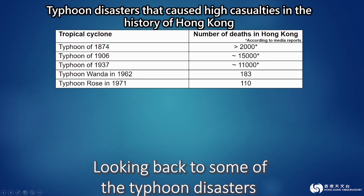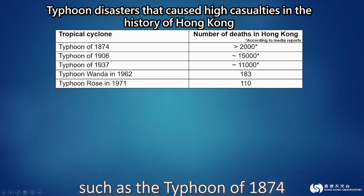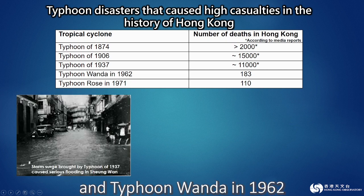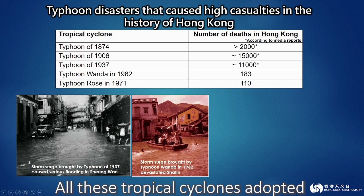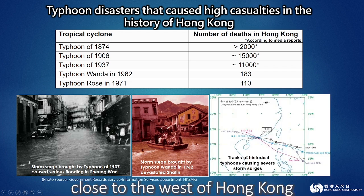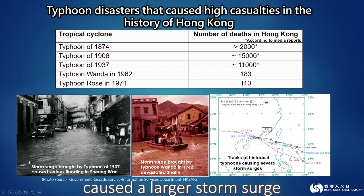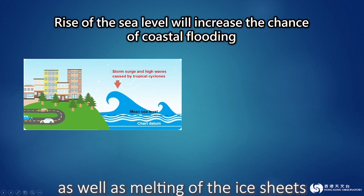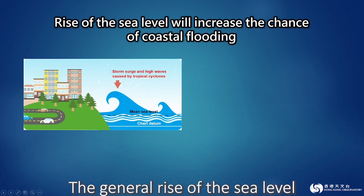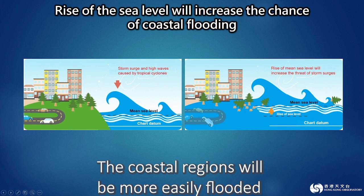Looking back at some of the typhoon disasters that caused the highest casualties in Hong Kong's history — such as the Typhoon of 1874, the Typhoon of 1937, and Typhoon Wanda in 1962 — they were all due to severe storm surges. All these tropical cyclones adopted the track of making landfall close to the west of Hong Kong; the dangerous semicircle plus onshore winds caused a large storm surge. Research has shown that climate change will cause warming and expansion of seawater, as well as melting of the ice sheets. The general rise of the sea level will increase the chance and risk of storm surges, and coastal regions will be more easily flooded.